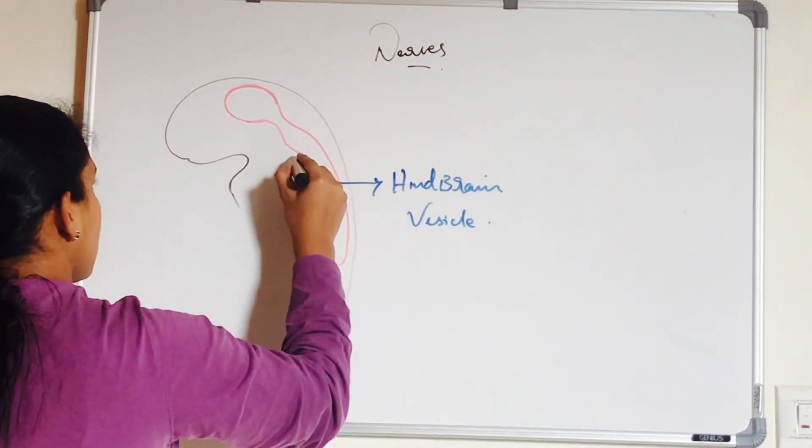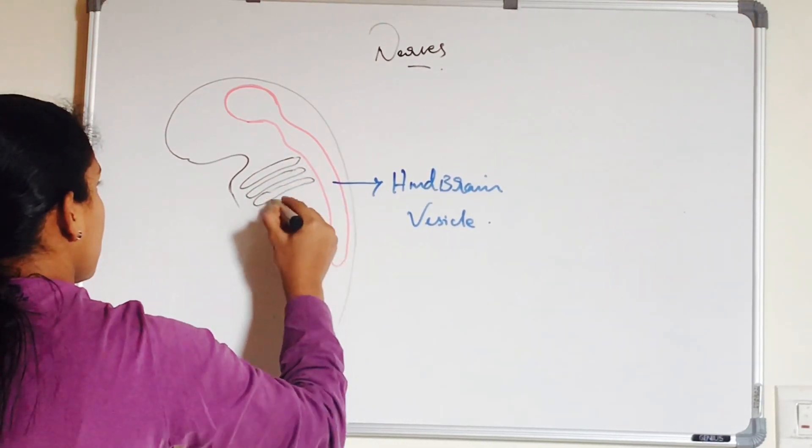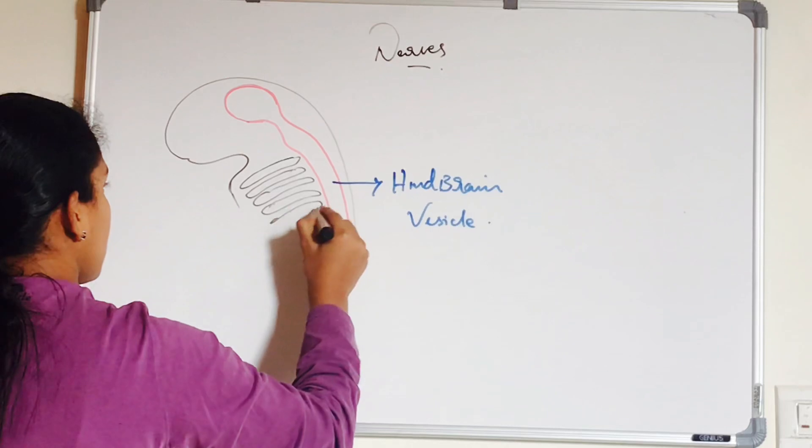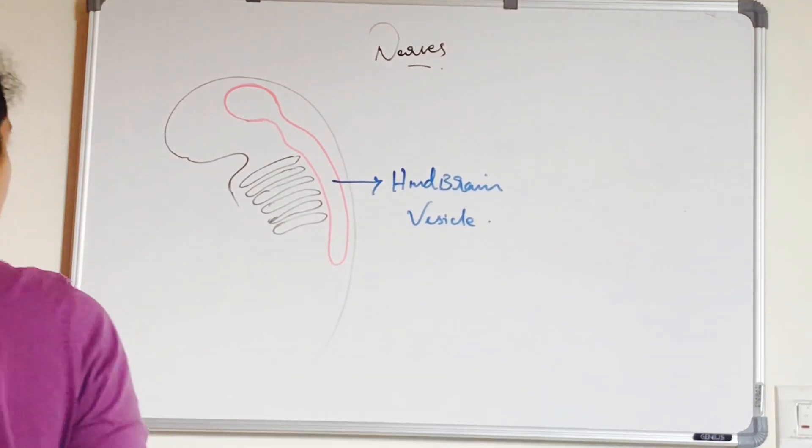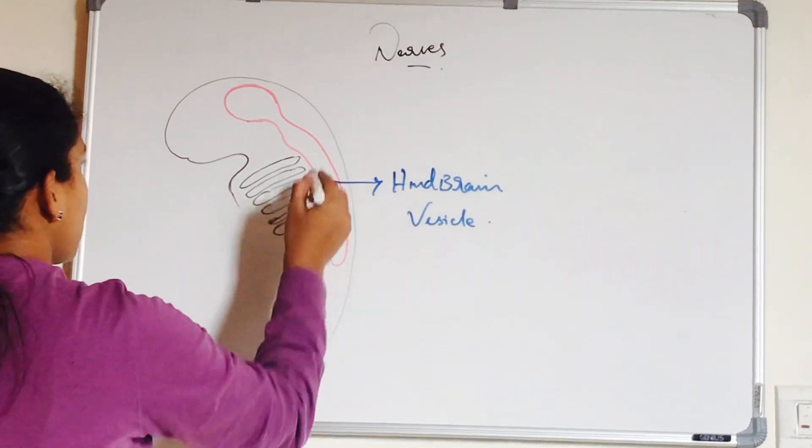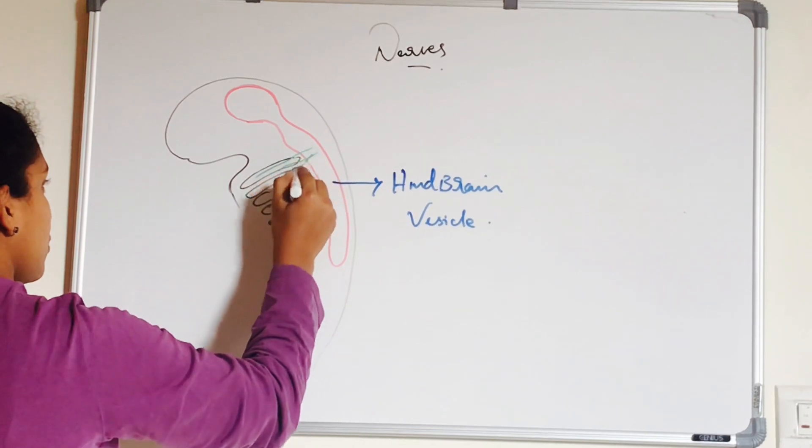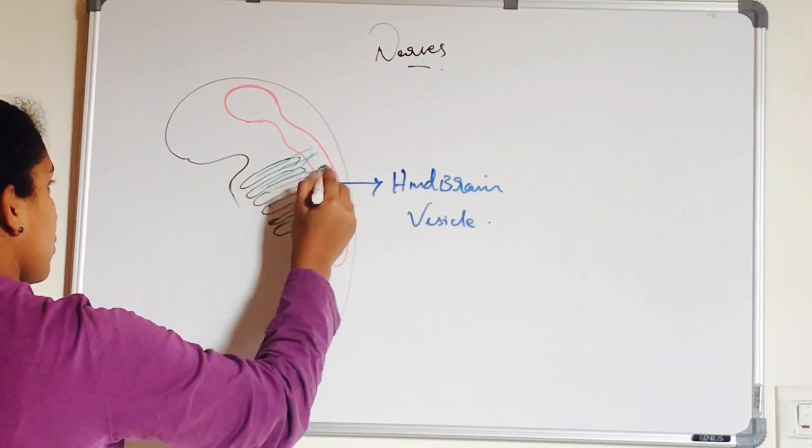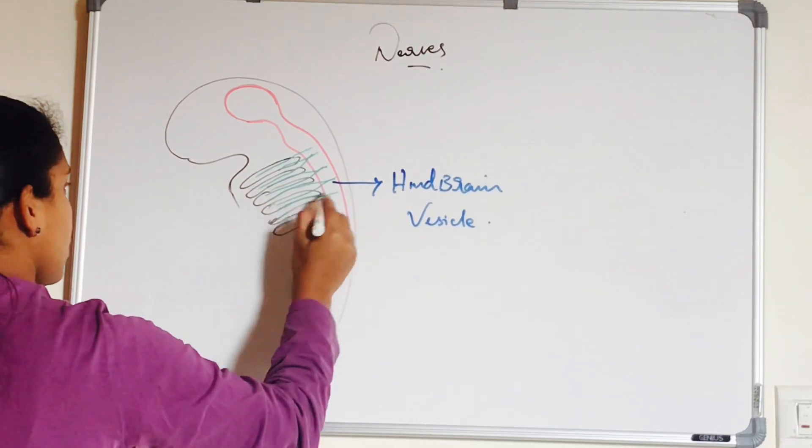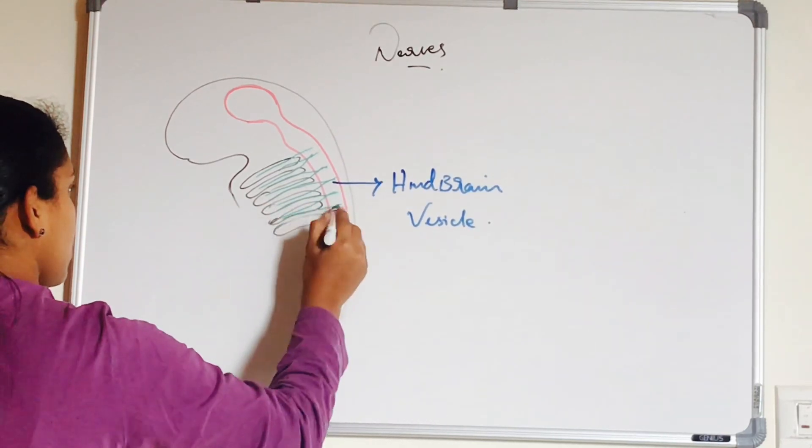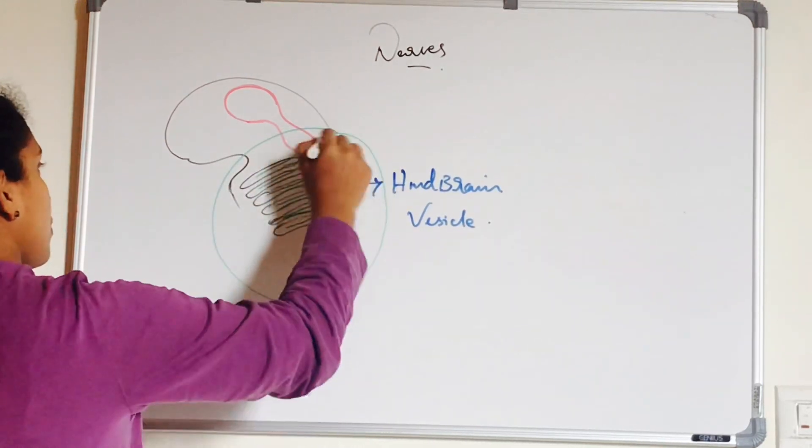When the nerve reaches this trema, it divides into pre-trematic and post-trematic branches. So you can see the nerve which divides into pre-trematic and post-trematic. This pre-trematic nerve accompanies the caudal border of the preceding arch. Let me explain in detail.